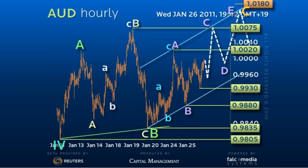Only below 9880 would suggest the entire 98.05 to 10075 consolidation pattern is developing as an interim B wave triangle, implying an eventual downside break to match the initial 102.55 to 98.05 decline, or a deeper 96.25 downside correction.